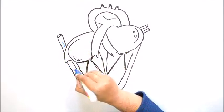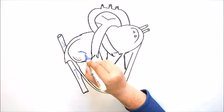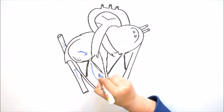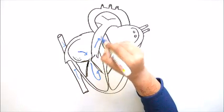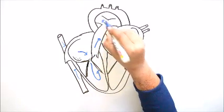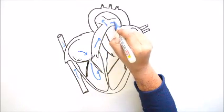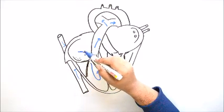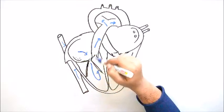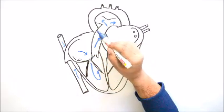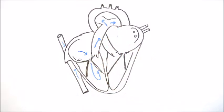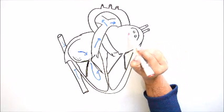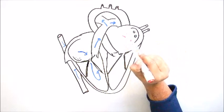Blood is coming by this way. This is your deoxygenated blood pouring into the right auricle, and then from the right ventricle it moves to the pulmonary artery. So it is coming from the superior and inferior vena cava into the right auricle, and then from the right ventricle it is moving to the lungs via the pulmonary artery for oxygenation.